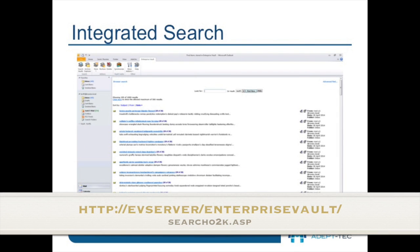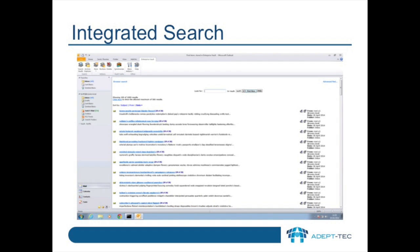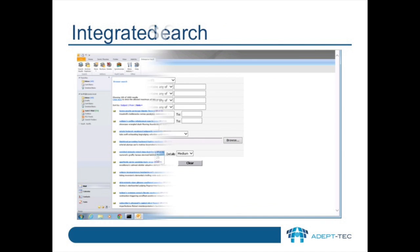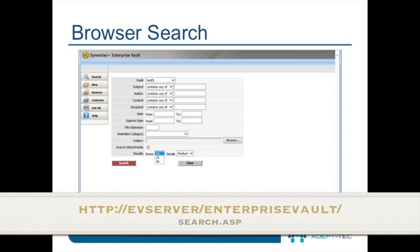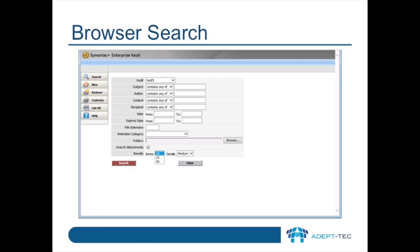Integrated Search in Outlook allows you to do simple searches against archived emails. A bit more advanced and controlled is Browser Search, which lets you search based on specific parts of an archived email, and you can control the number of results which are returned.